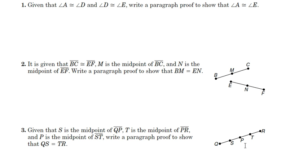So QS then would be equal to one-half QP, and TR would equal one-half PR.